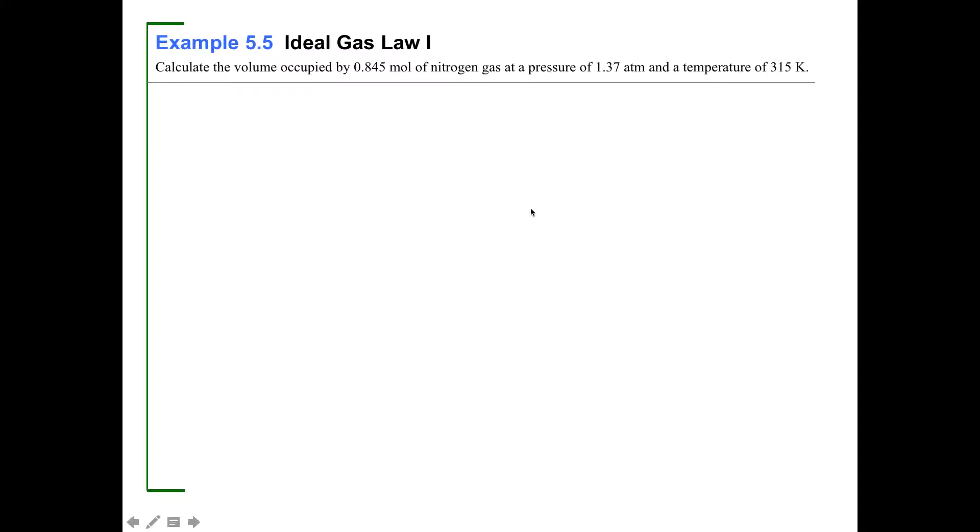So calculate the volume occupied by 0.845 moles. Let me get my pen out here. Moles is equal to 0.845 moles. 0.845 moles of nitrogen gas at a pressure. I see gas here, by the way, so I'm thinking, aha. If it's a gas, my mind immediately goes to PV is equal to NRT. At a pressure of 1.37 atmospheres and a temperature of 315 kelvins.